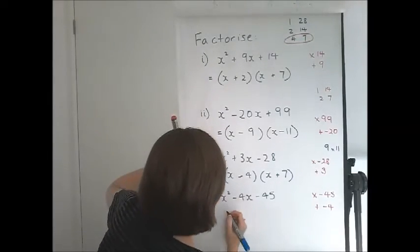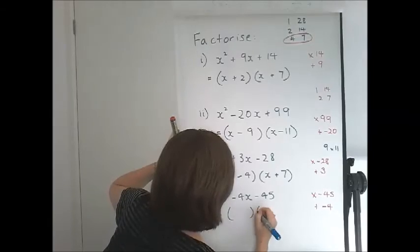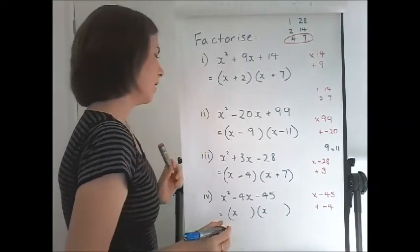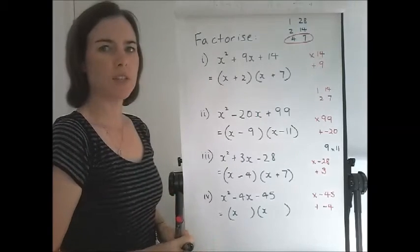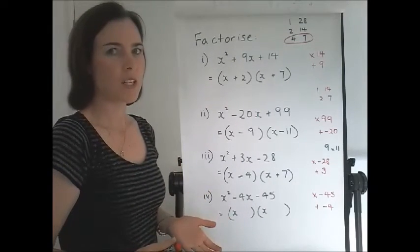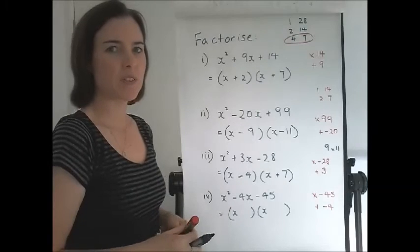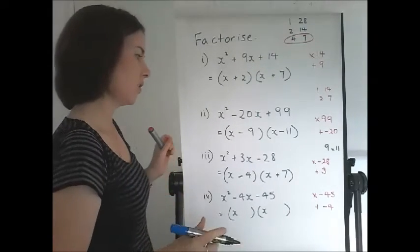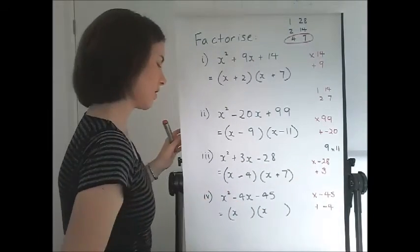Multiply to negative 45 and add to negative 4. So we need our brackets again. What numbers multiply to 45? You can go through 1 times 45, 3 times 15, 5 times 9. 5 times 9 sounds good because they have a difference of 4.